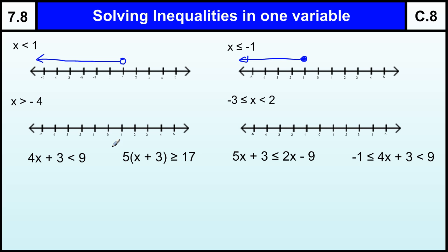x is greater than or equal to, sorry, greater than minus 4, so we draw a circle at minus 4, draw an arrow, this is greater than, and it's not equal to, so we leave it hollow.